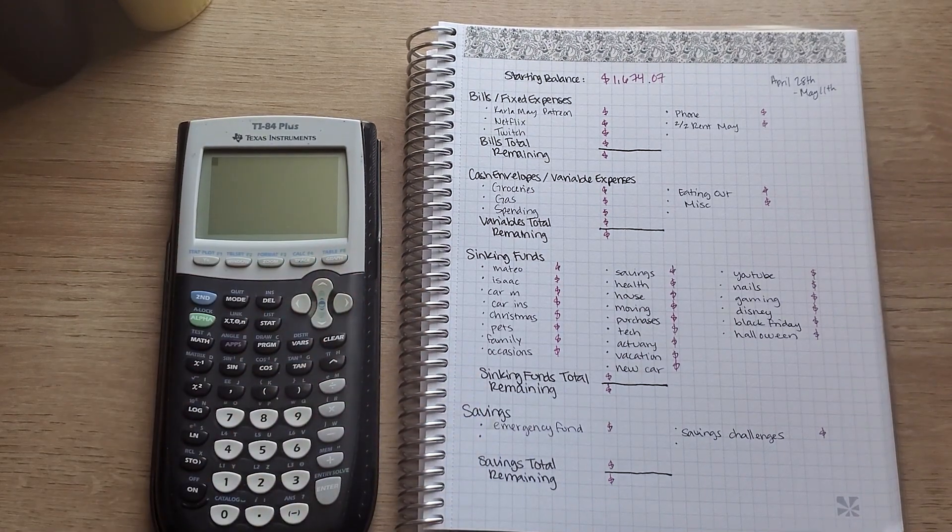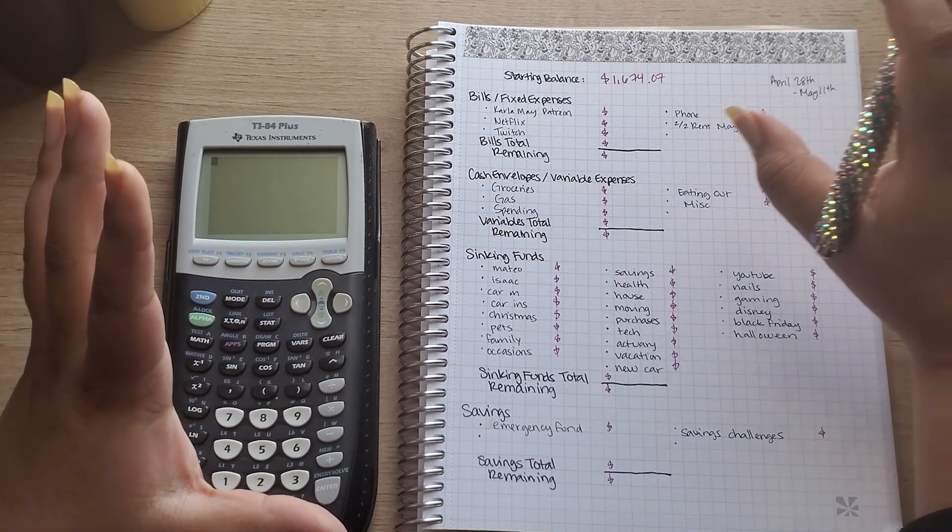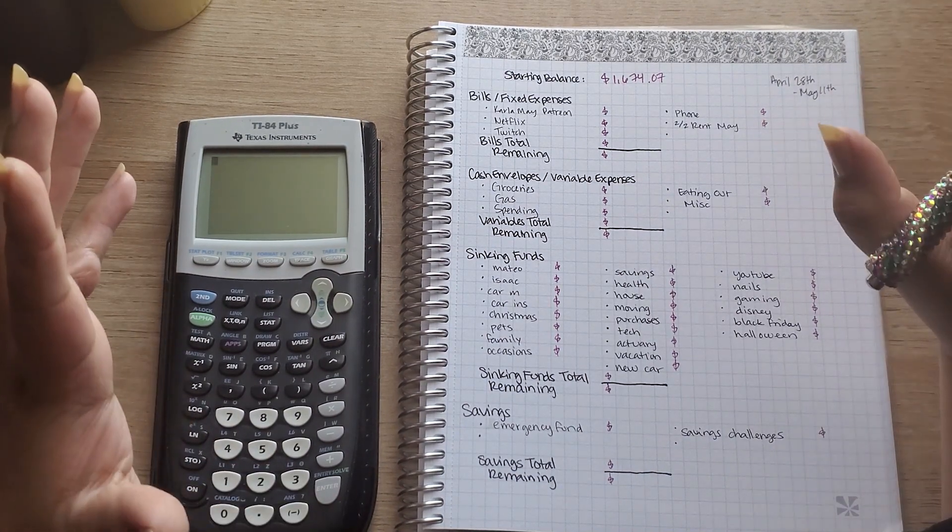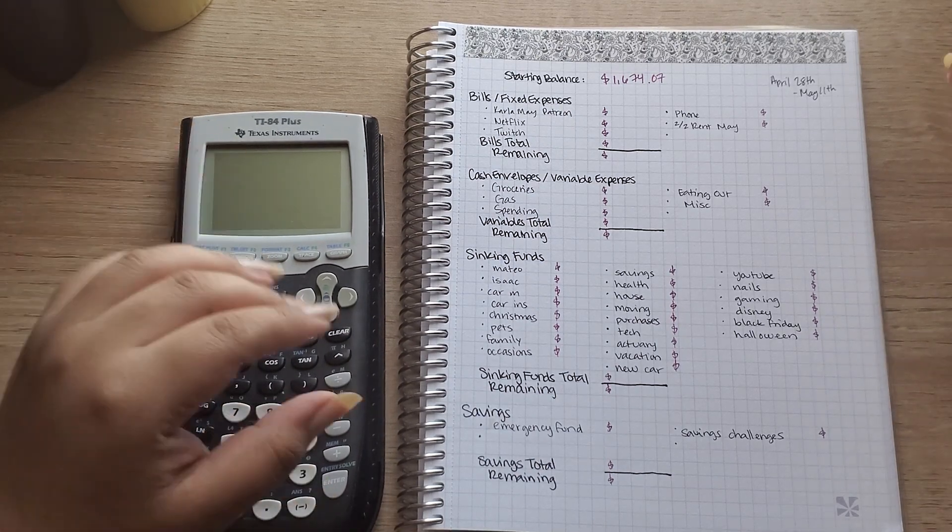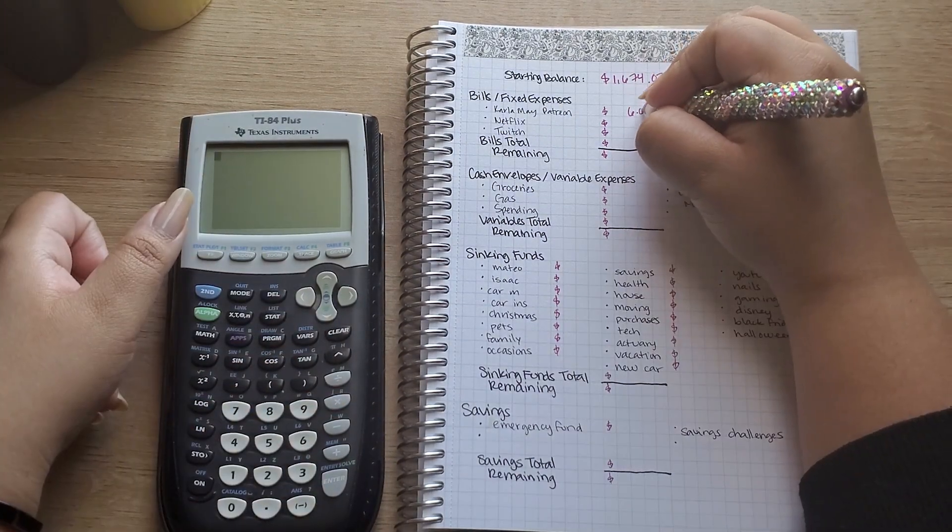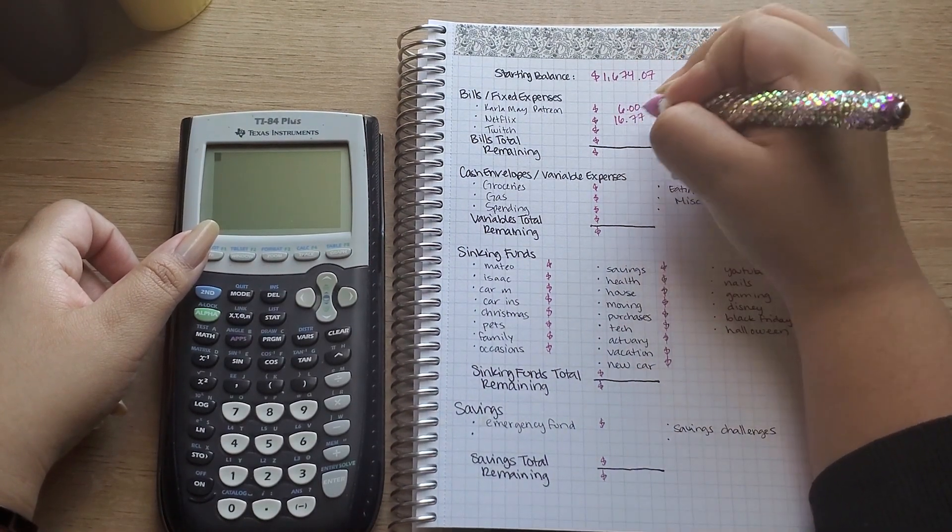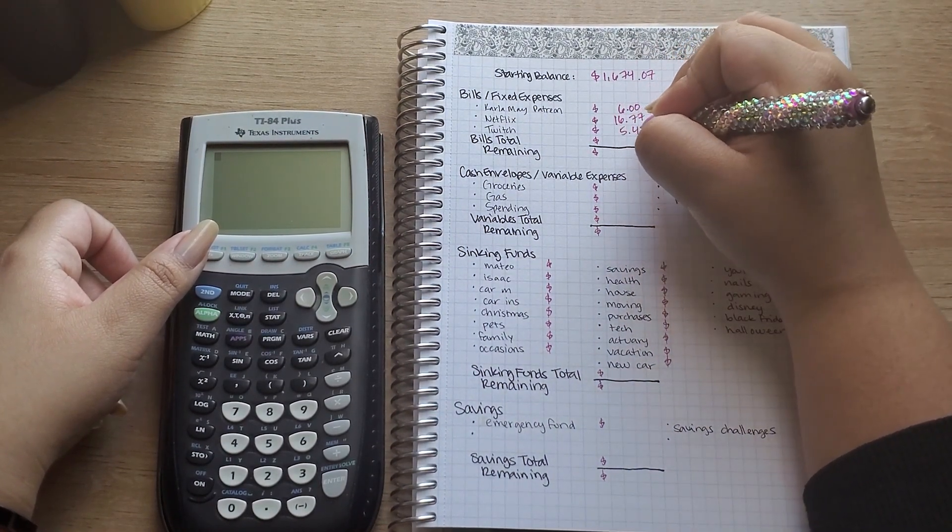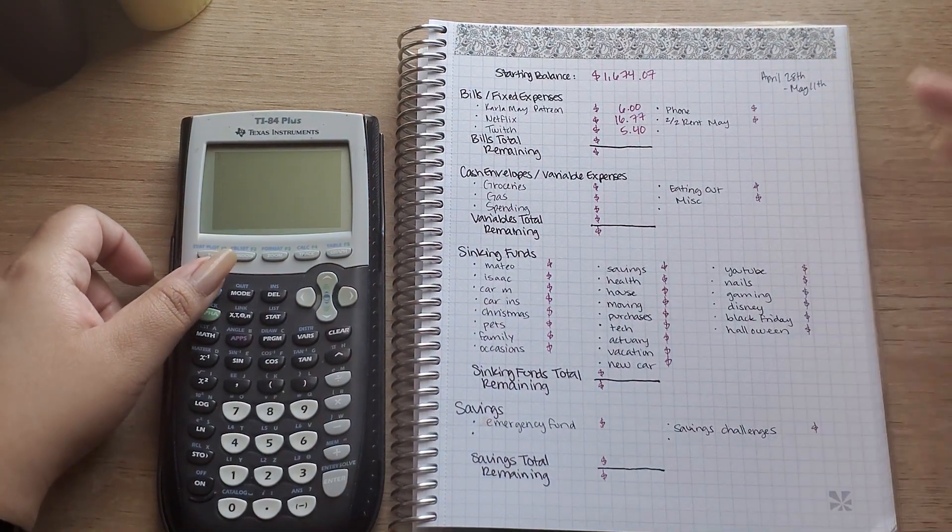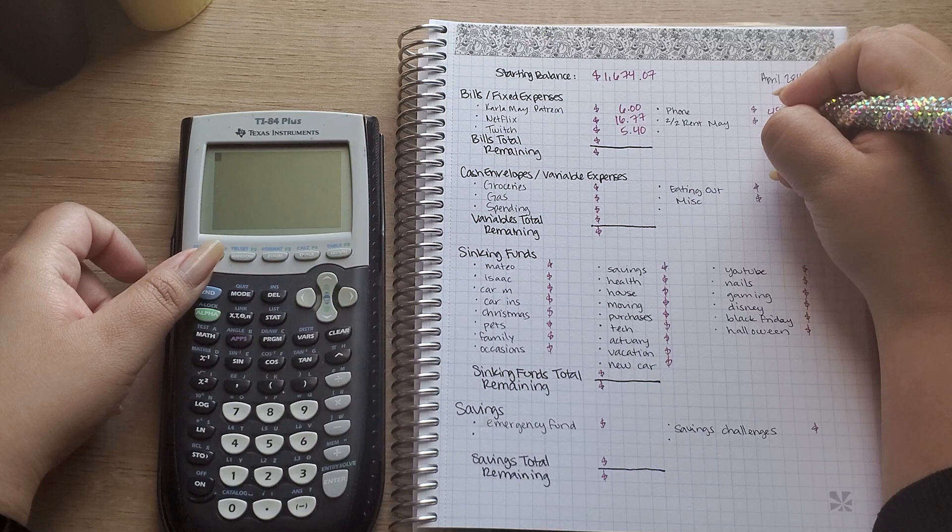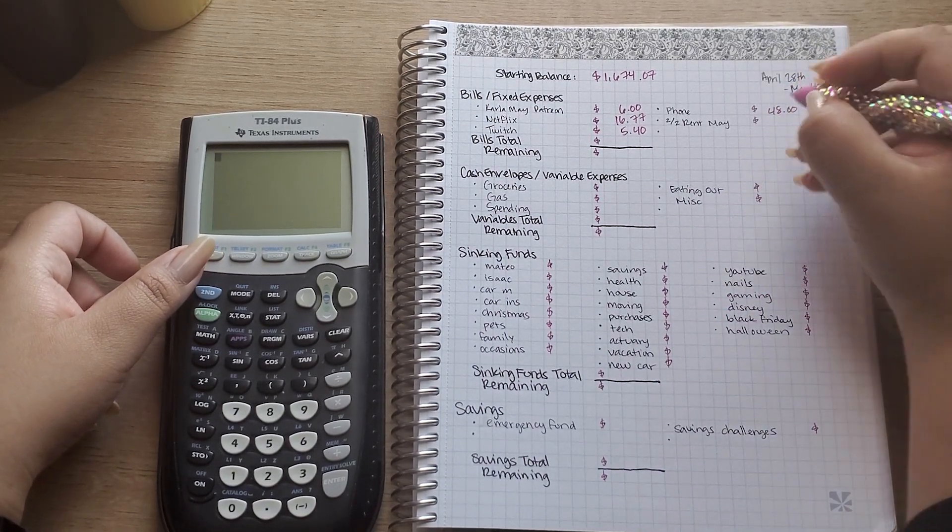So let's start off by going over my bills or fixed expenses. My Carla May Patreon is going to be $6. I signed up for the smallest tier currently. Let's continue, that's $6. My Netflix is $16.77, my Twitch for this paycheck is $5.40. My phone is $48 and half of my portion of rent is $296.